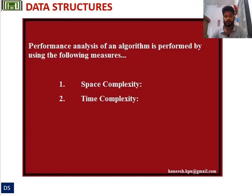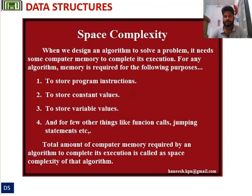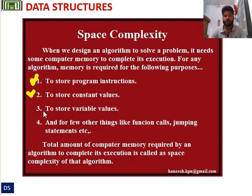These are the measures for performance analysis of an algorithm. The first measures are space complexity and time complexity. When you design an algorithm to solve a problem, that algorithm needs some memory to complete its execution. Memory is required for the following purposes: to store program instructions, to store constant values, to store variable values, and for a few other things like function calls, jumping statements, etc.